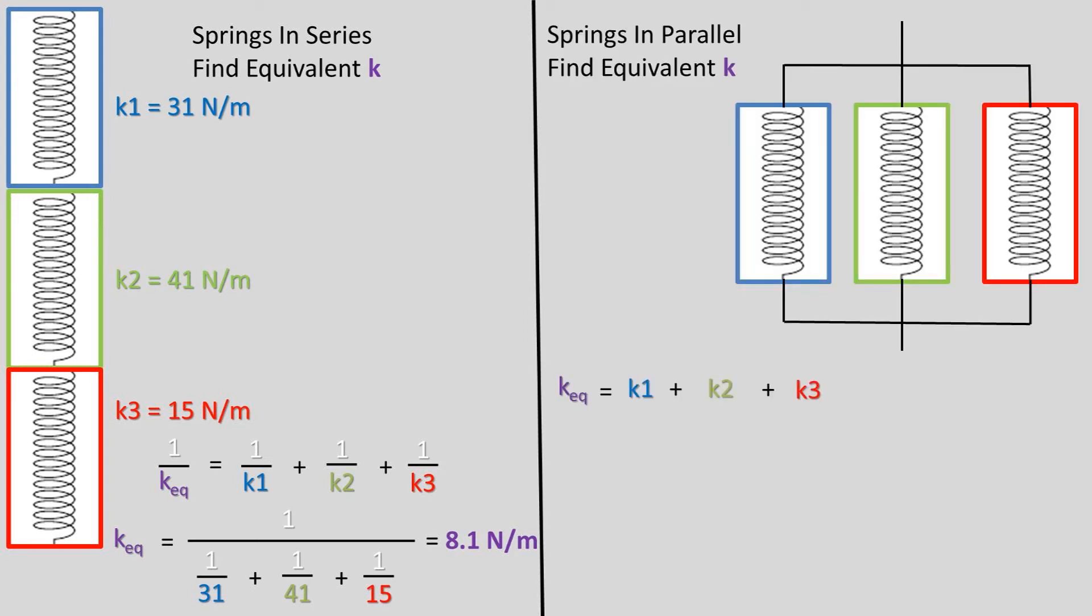Now for parallel, we will use the same spring constants to find the equivalent spring constant. We add up the individual k values. Plugging in our numbers, we get 87 newtons per meter for our equivalent spring constant, k.